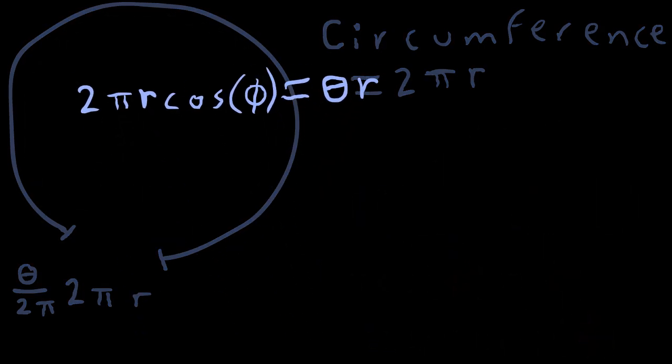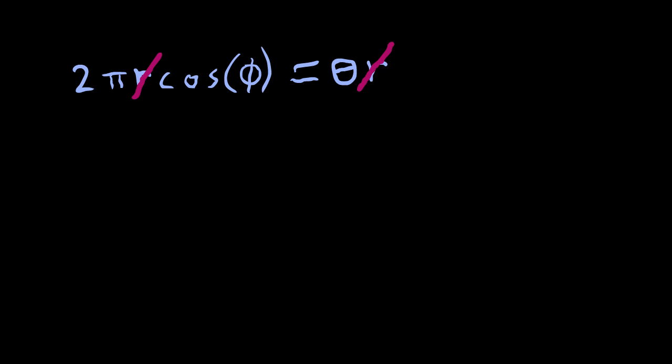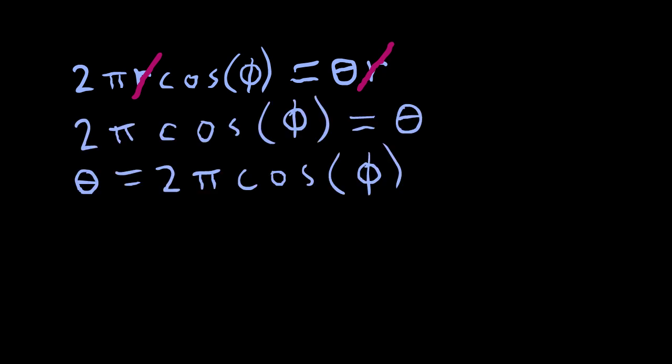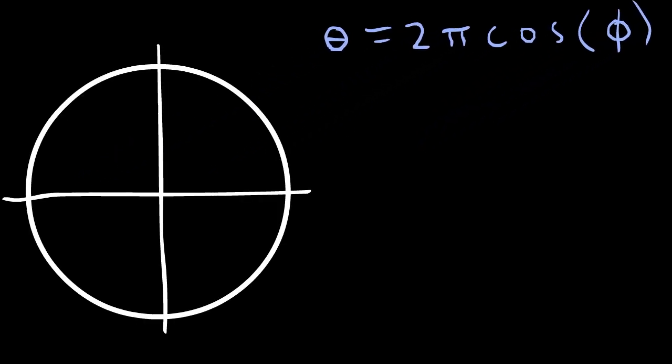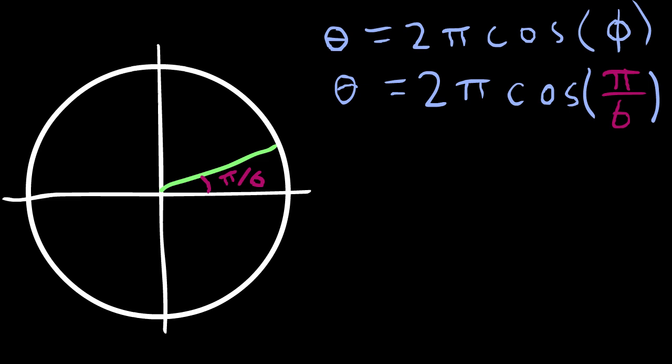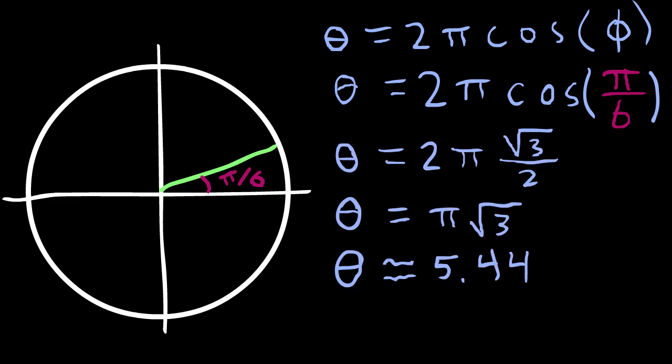Setting these two circumferences equal to each other, we can cancel the r's, leaving our final formula of θ = 2π cos(φ). The formula should be intuitive. If your angle of elevation is really low, then cos(φ) is closer to 1, and 2π isn't diminished by that much, meaning that the angle of the circle sector is closer to 2π.